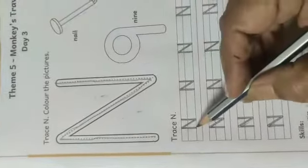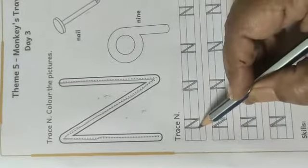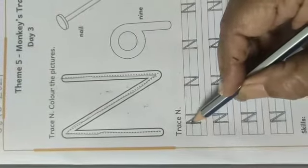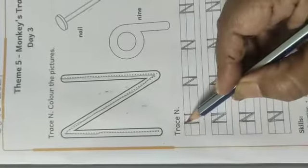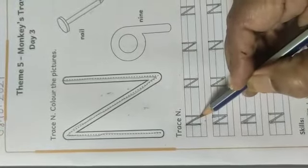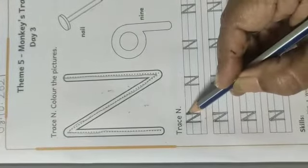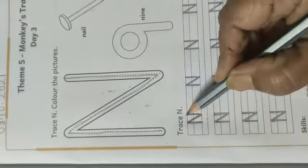Look here. Put pencil here on blue line. Go up, touch the red line. Slant down and again straight up. Touch the red line.